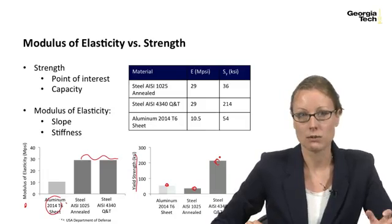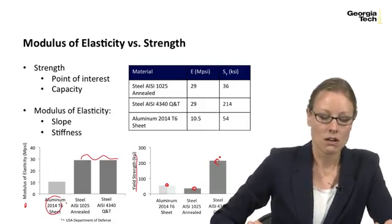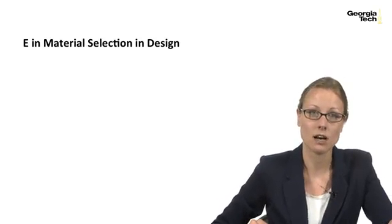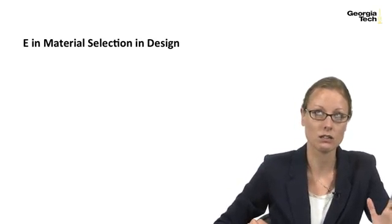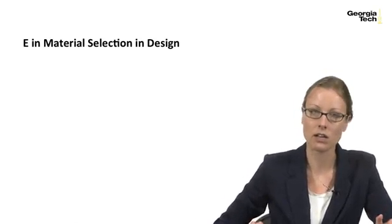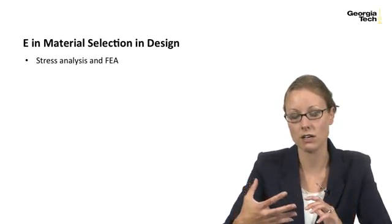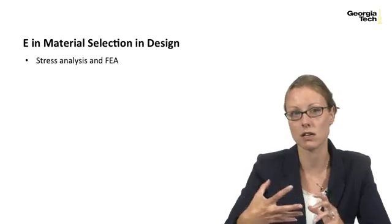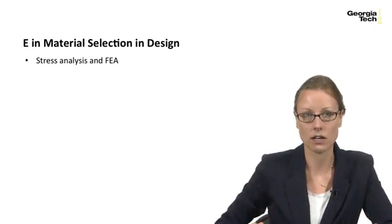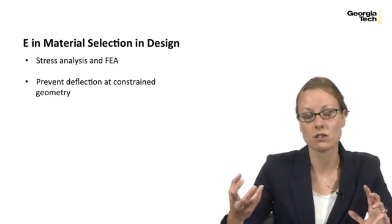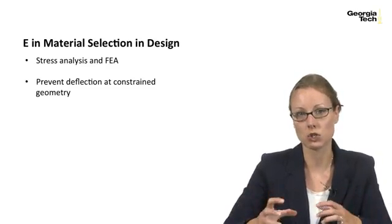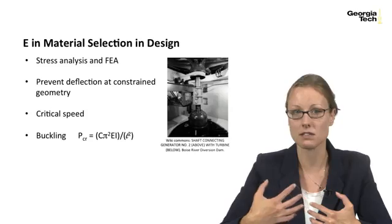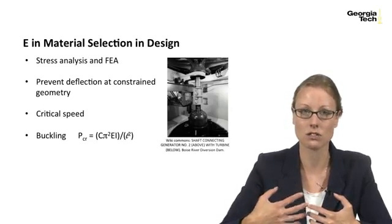The values for these material properties came from MIL Handbook 5J, a USA Department of Defense standard. The modulus of elasticity is especially important in stress analysis and FEA, since it's intrinsic to the material and must be correctly specified. It's also critical when trying to prevent deflection in a constrained geometry, and for phenomena like critical speed and buckling, which are very dependent on the modulus of elasticity.